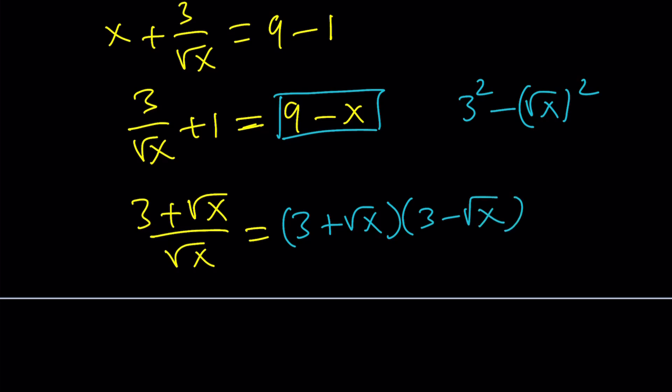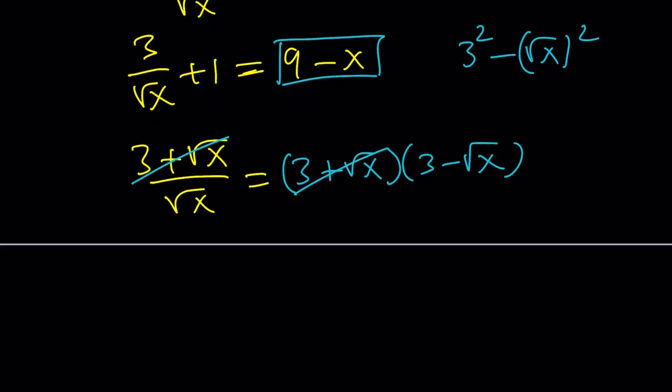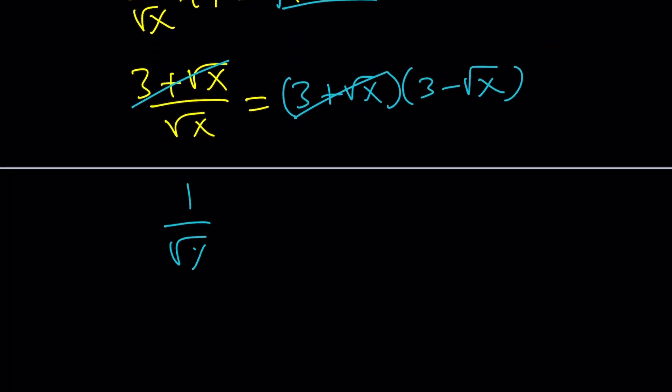What am I going to do? 3 plus root x cannot be 0 if x is real, because square root of x is greater or equal to 0. So these two can be cancelled out, leaving us with 1 over square root of x equals 3 minus square root of x. What am I going to do with this? Add square root of x to both sides. If we do, we get square root of x plus 1 over square root of x is equal to 3.